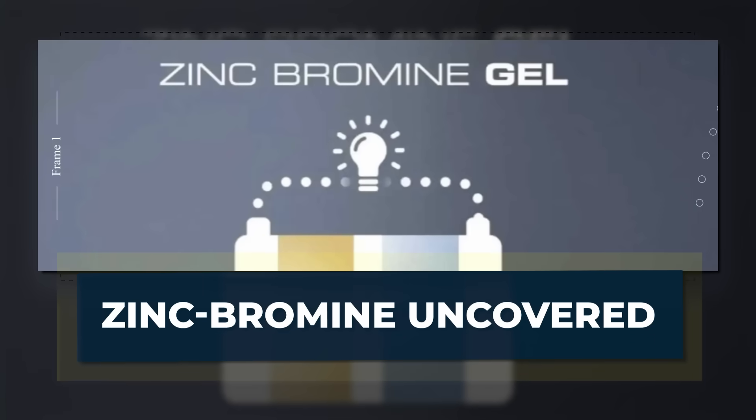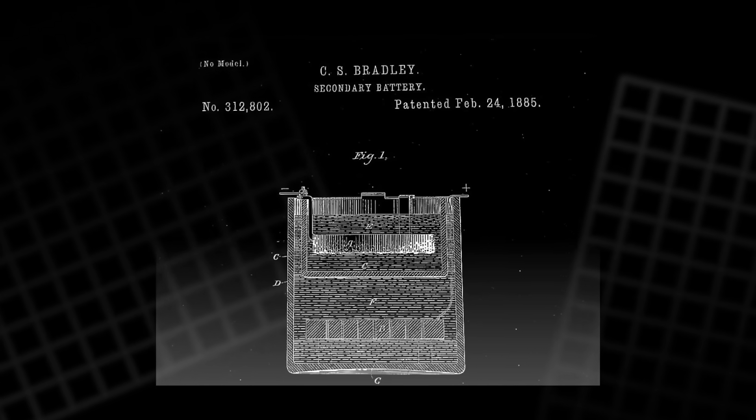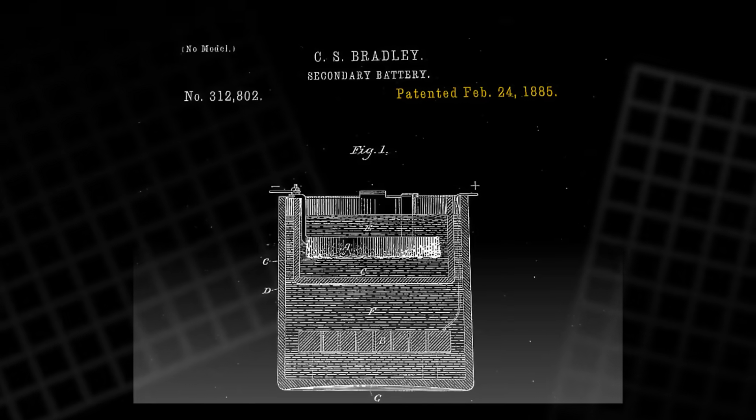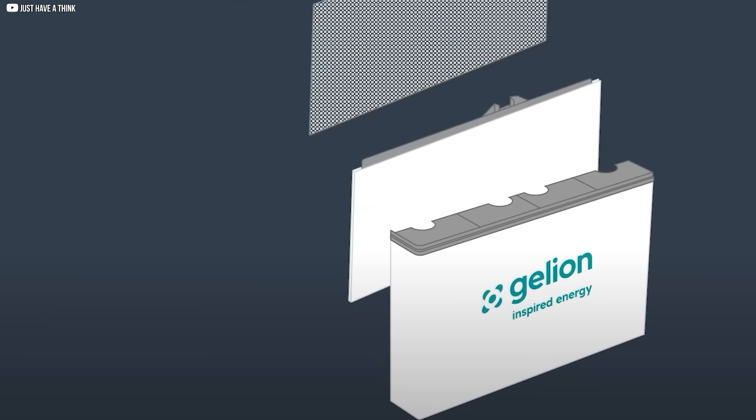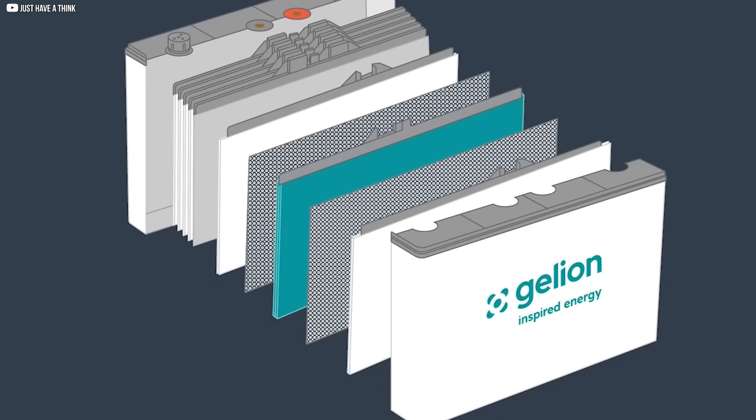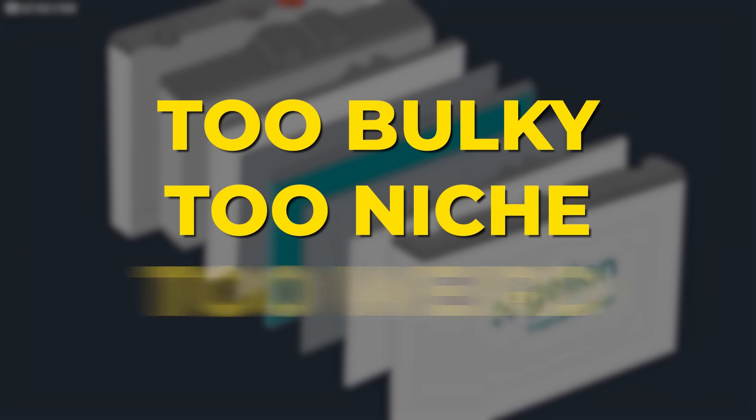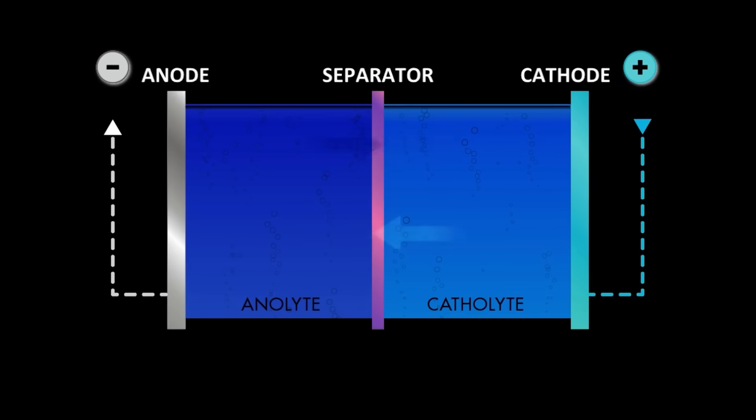Zinc bromine uncovered. Zinc bromine batteries aren't new. They were first patented in 1885. But for most of their existence, they've been overlooked. Too bulky. Too niche. Too weird. That's changing.